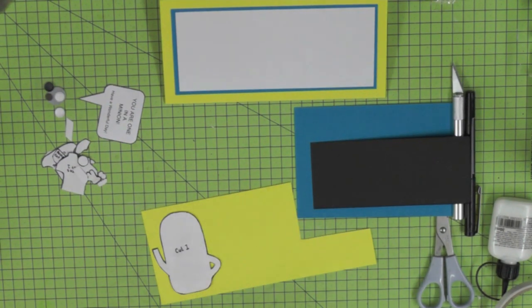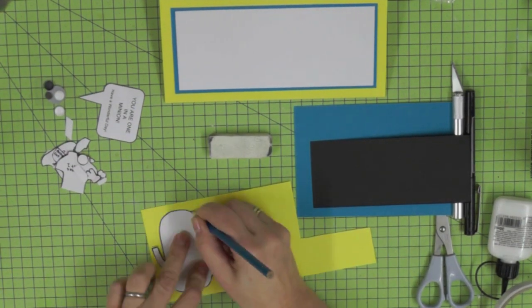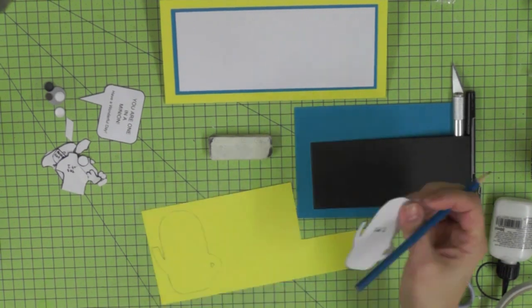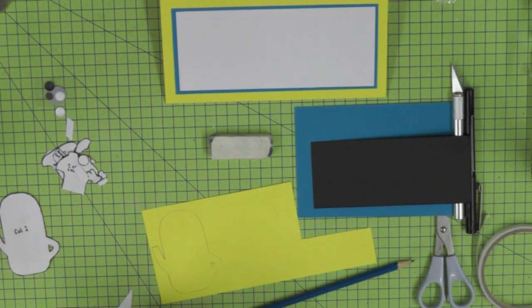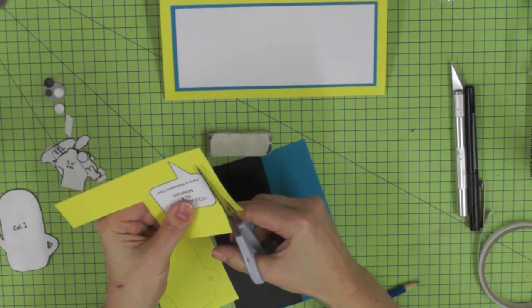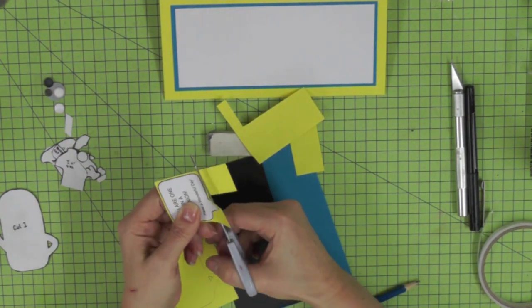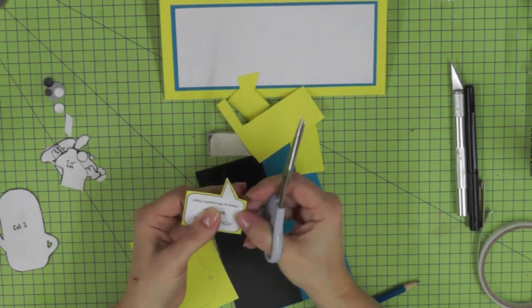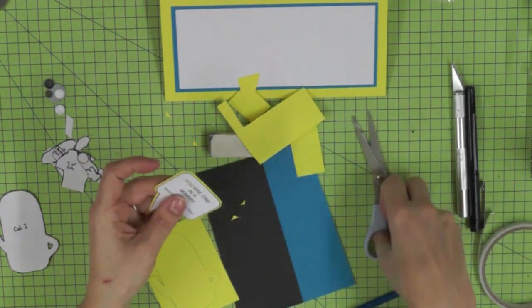So that's the bare bones of the card all put together. Now we're going to create some of the details. I'm going to cut out the body of the minion in the yellow cardstock, so I'm tracing around that with a pencil. I'm also going to mount the speech bubble onto the yellow cardstock and I'm going to cut that out with a small yellow border all the way around. So I start by cutting the straight edges and then I round off those corners.